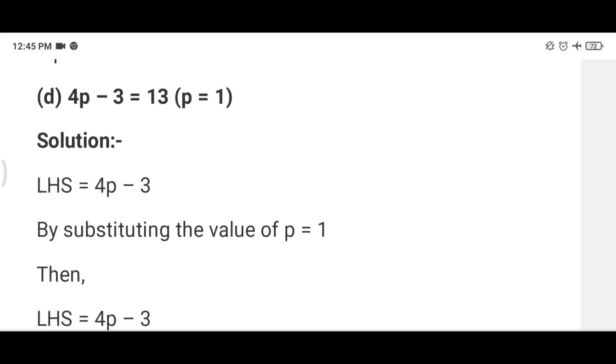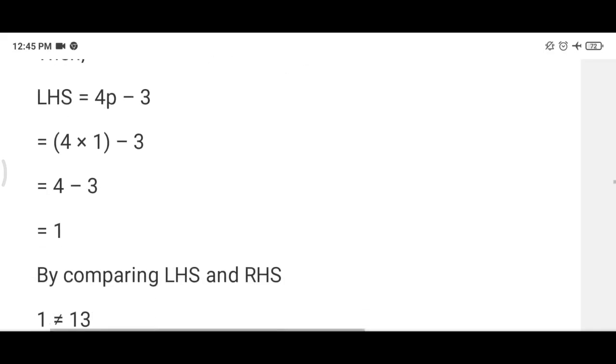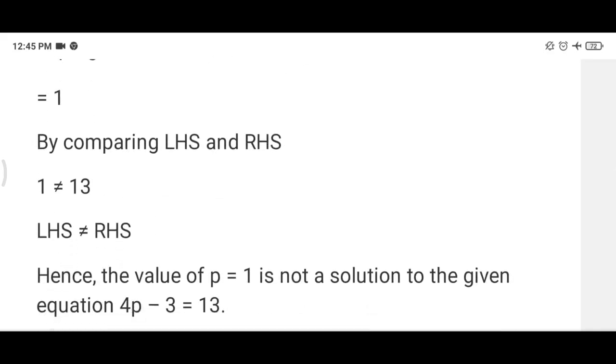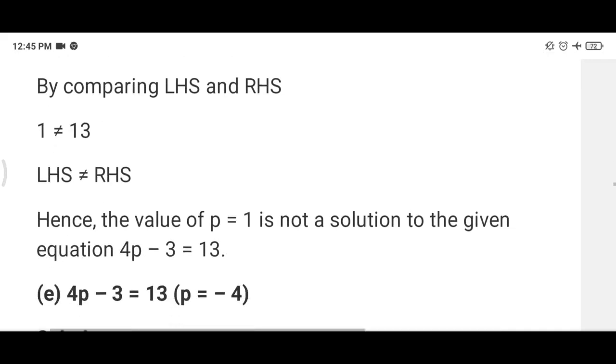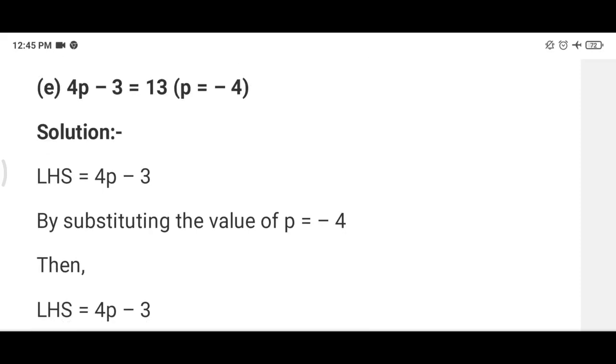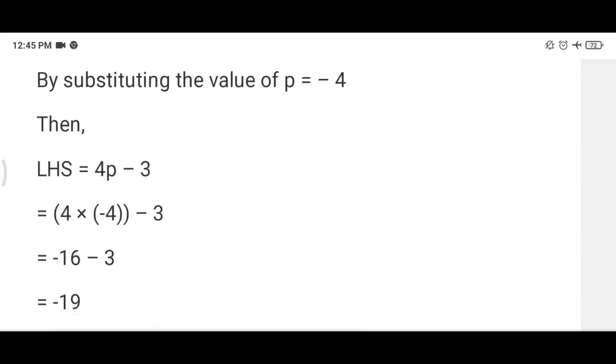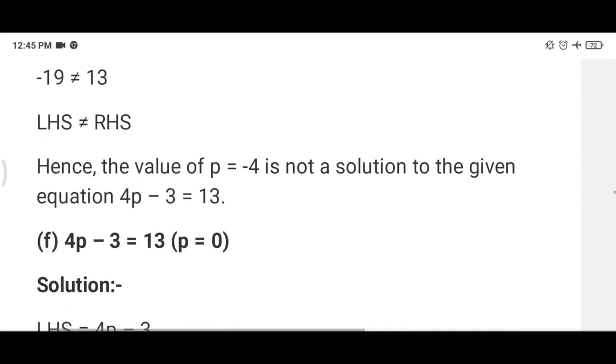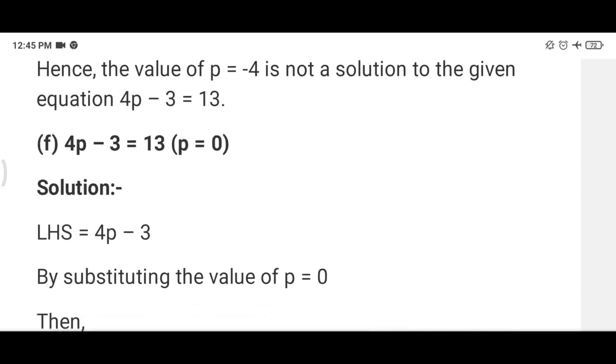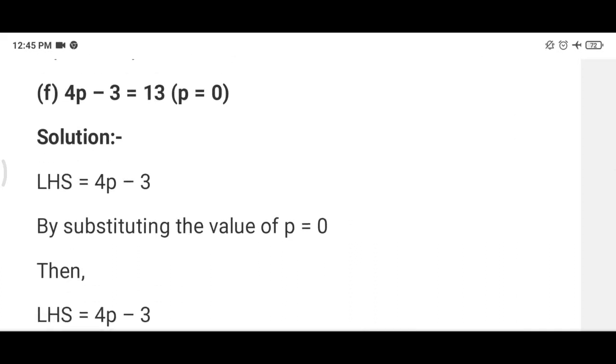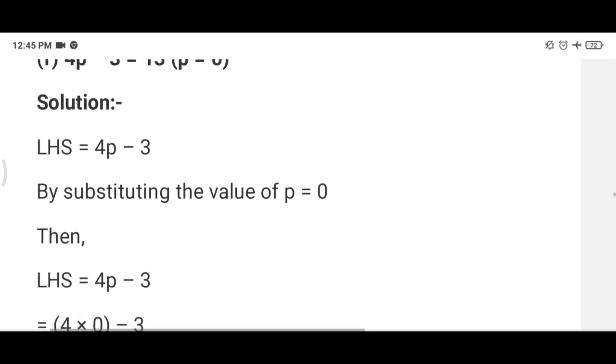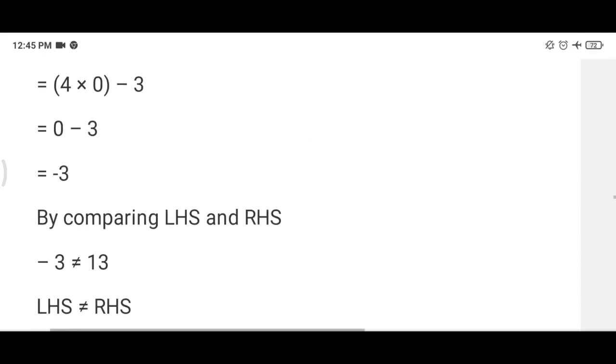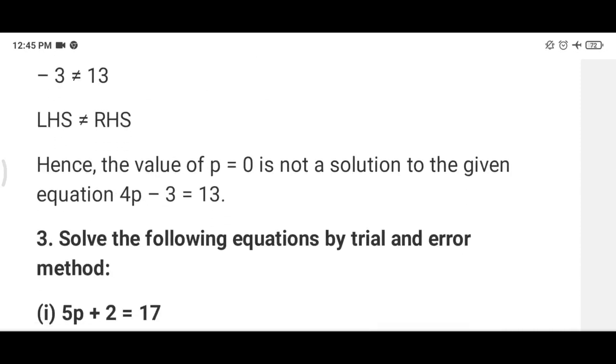In D part you have to put p is equal to 1. 4p, so 4 into 1 is 4, 4 minus 3 is 1, but we have 13, not 1. That's why it is not the solution of the equation. In E part you put p equals minus 4. So 4 into minus 4 minus 3, so minus 16 minus 3 is equal to minus 19. E part is also not the solution. F part 4p minus 3 equals 13, p equals 0. So 4 into 0 is 0 minus 3 is minus 3, not equals to 13. So 0 is not the solution.